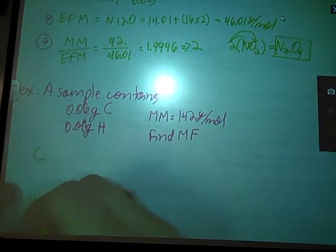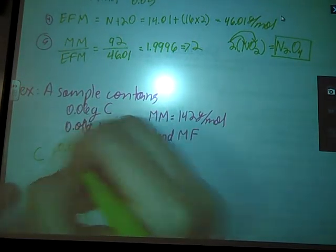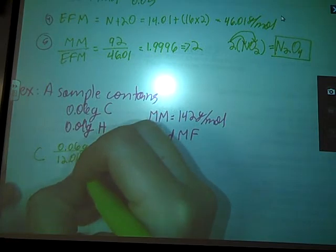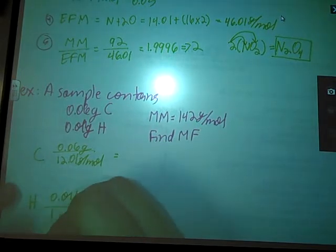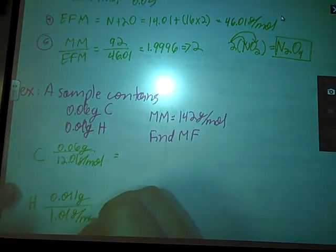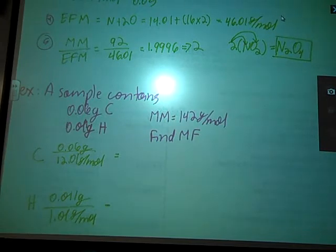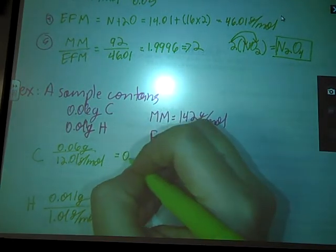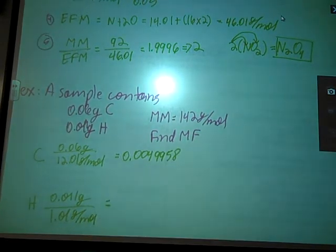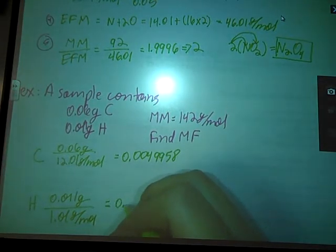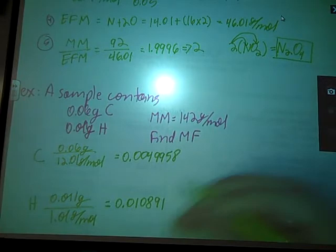As per usual, step one, convert to moles. Since we're back in mass, I'm back to using the formula mass. 0.011 divided by 1.01. Let's see what we get when I plug these into my calculator. My handed in the calculator. Never leave home without them. 0.0049958. Remember to carry out as many decimal places as you can stand. It ultimately makes these problems easier.